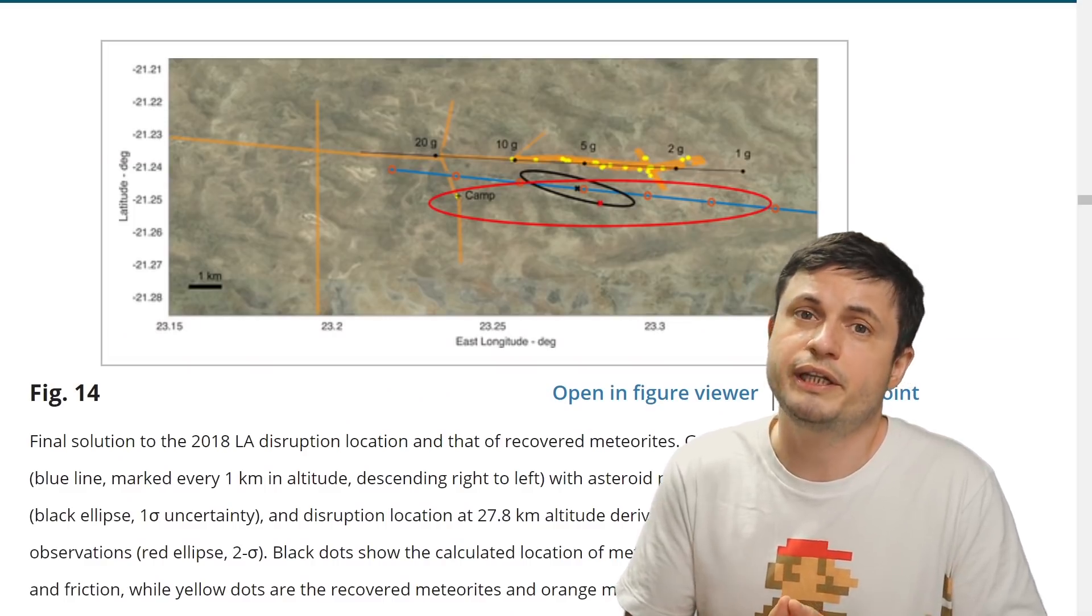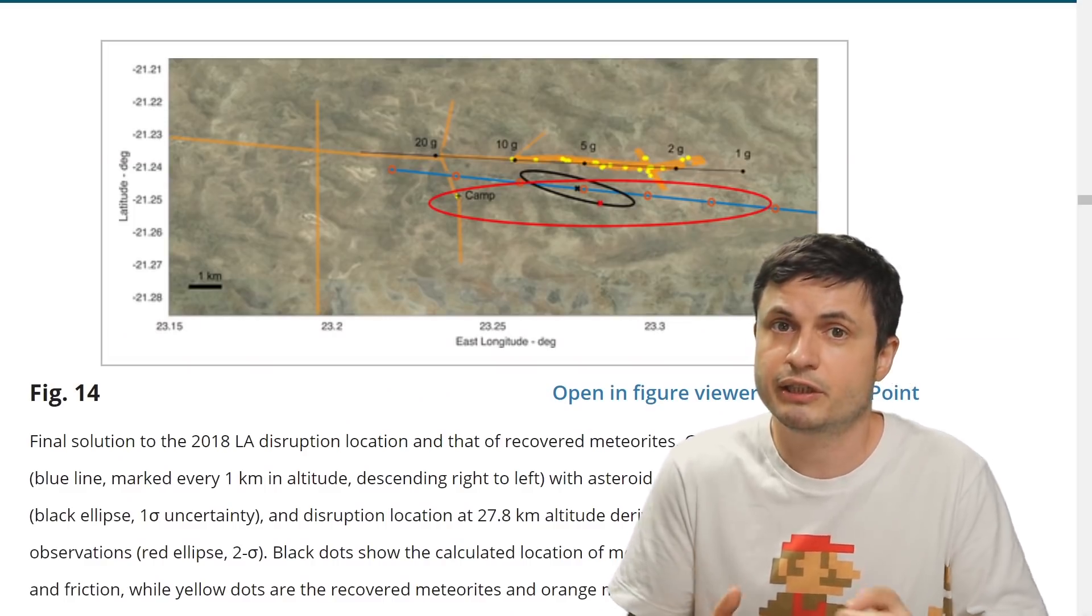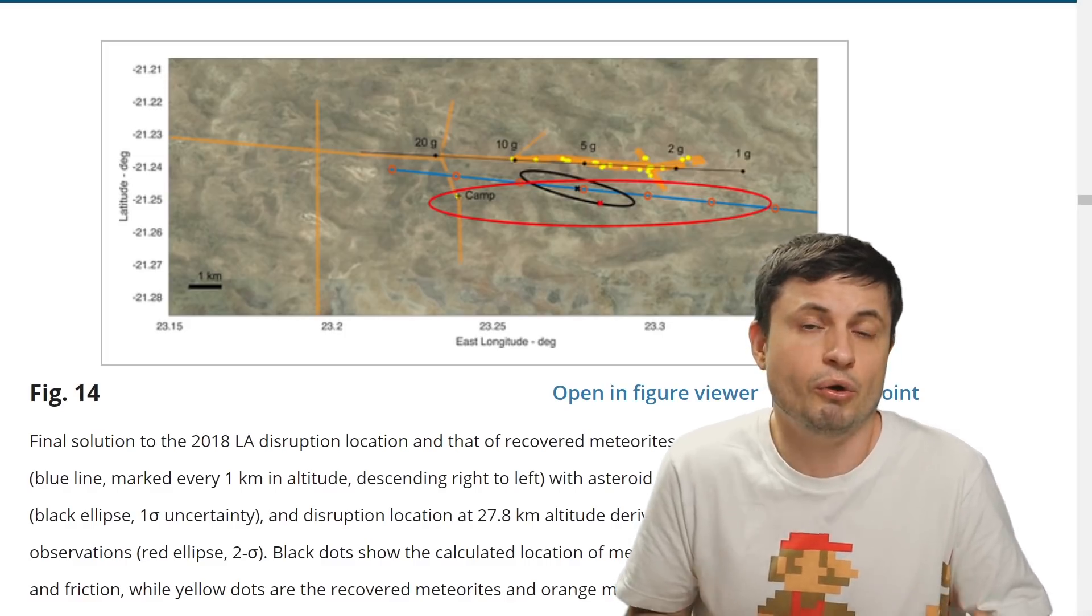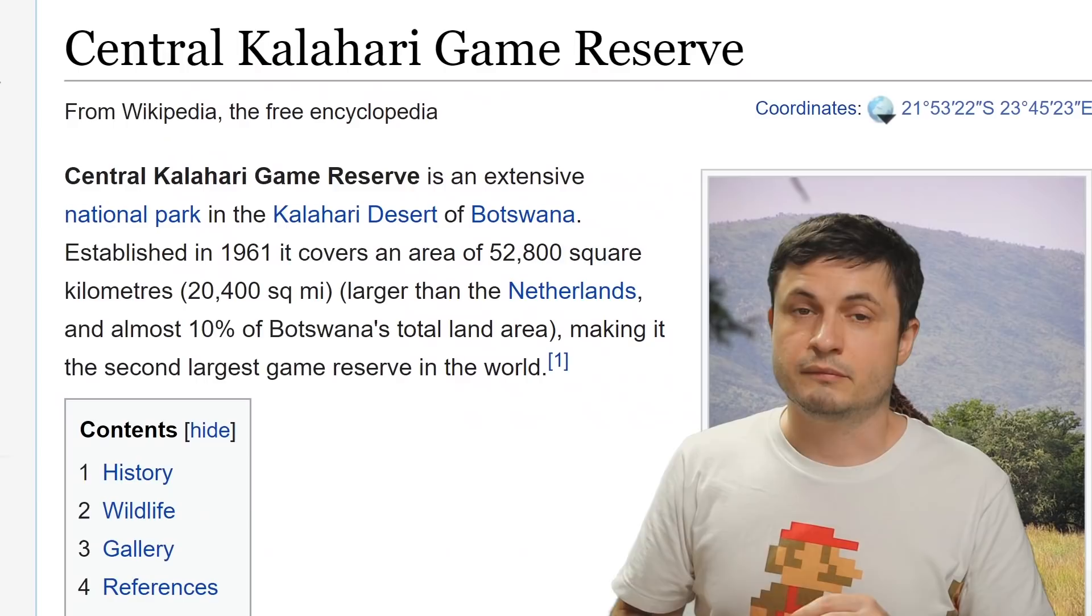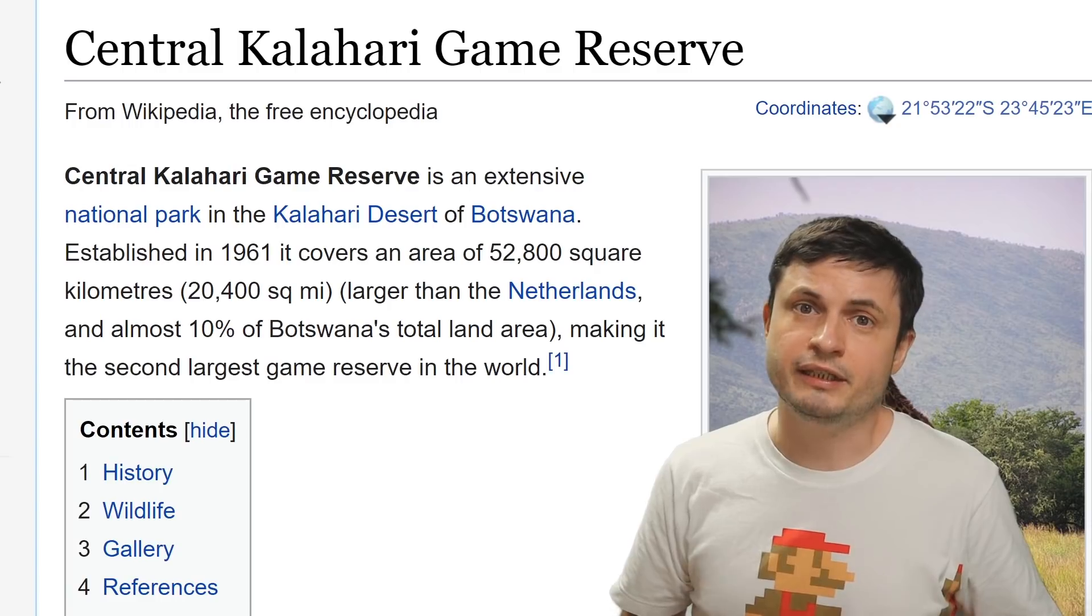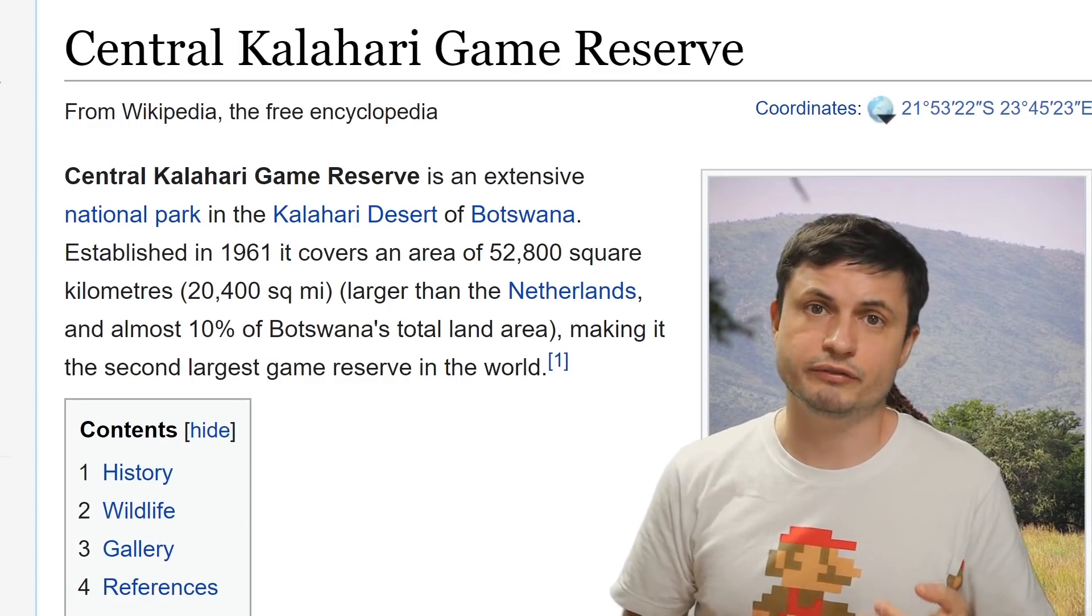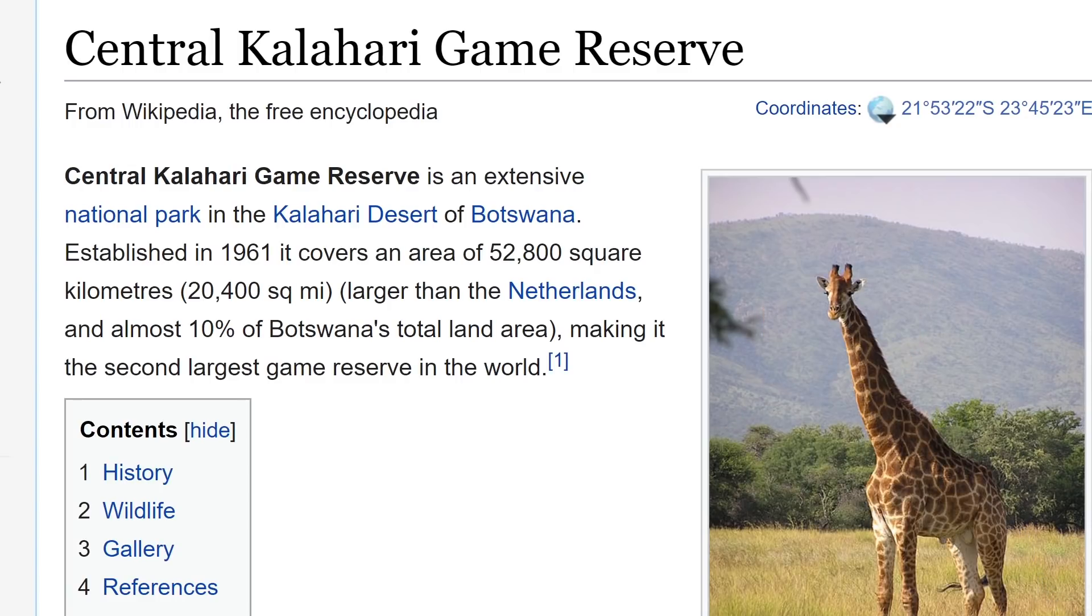And by combining the observations with the trajectory calculations, they were able to work out the dispersal area for where they might find all of the fragments. Now, this by itself is already a tremendous achievement, just figuring out where this tiny rock probably landed on a relatively huge planet.